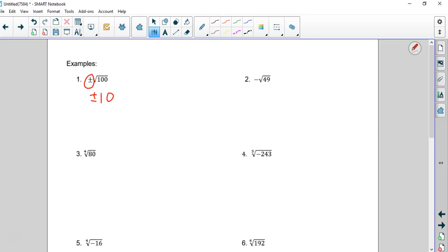Number two. There is a negative, but the negative is not inside. This means the opposite of the square root of 49. So we work backwards. We take the square root of 49 first, which is 7, and then we take the opposite of it. So our answer is negative 7.